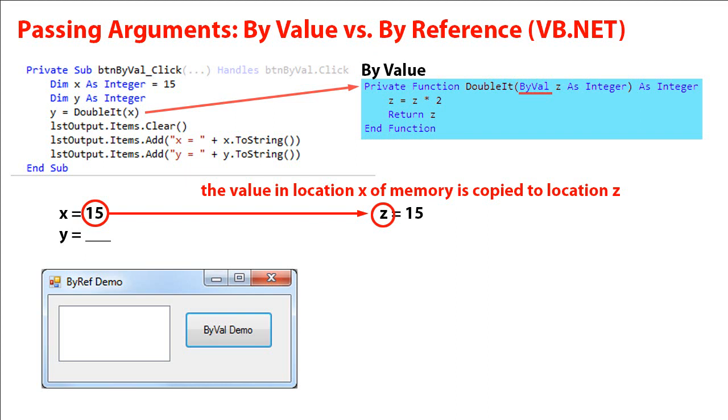And so we can double the value of z, so 15 times 2 is 30. And then the next statement, we're going to return z, so we take that value of 30. That's going to replace the doublet x in the statement y equals doublet x, and y then takes on a value of 30. And then we're going to clear the list box, and we're going to display the values of x and y in the list box. You see we get 15 and 30.